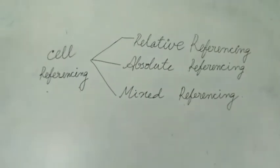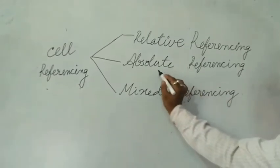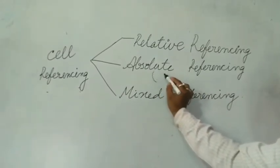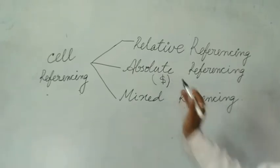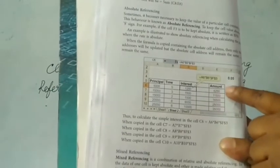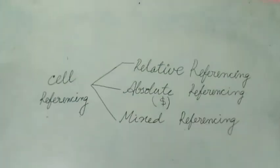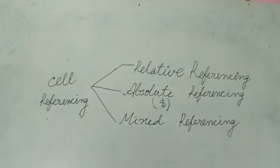In Absolute Referencing, I want to keep the value of a particular cell constant. This can be done by using the dollar sign ($). As shown in your book, the dollar sign is placed before the cell address. When you drag the formula, that particular value will remain constant and the calculation will give you the correct answer.